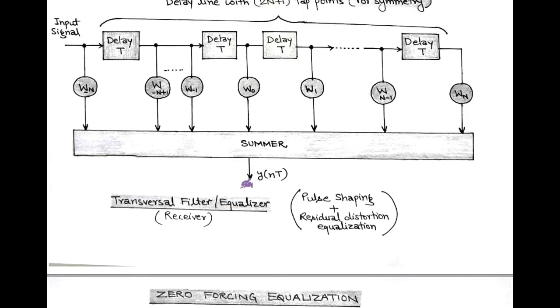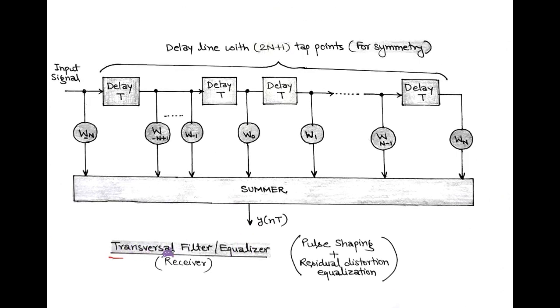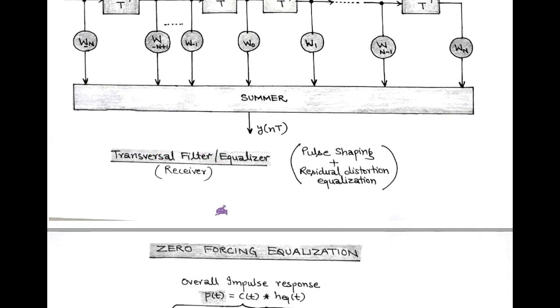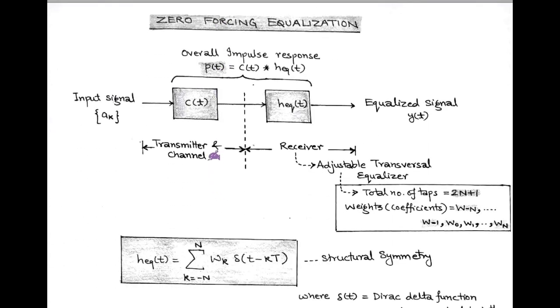Due to this feature, this equalizer is called transversal filter and taking part as a receiver. This transversal filter performs both pulse shaping as well as residual distortion equalization and hence called transversal filter. Now, using this combining feature of transversal filter, a zero forcing equalization is performed.